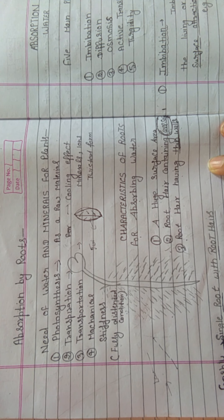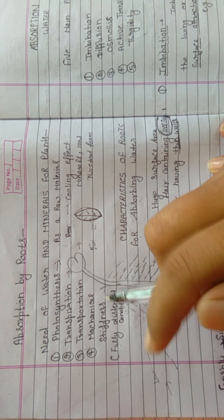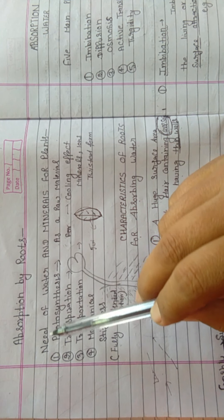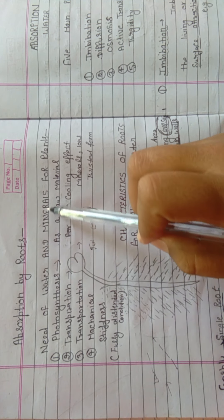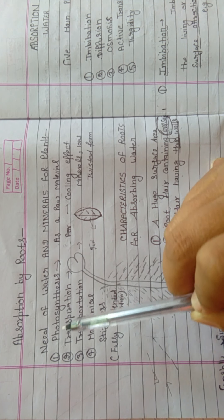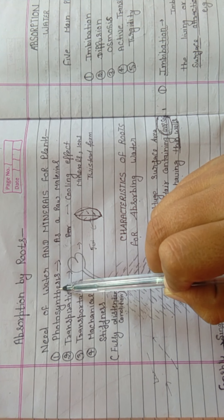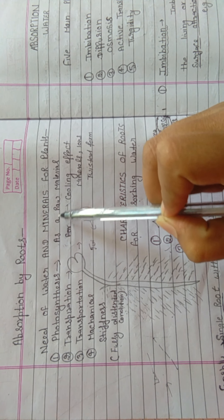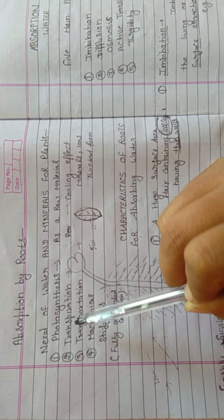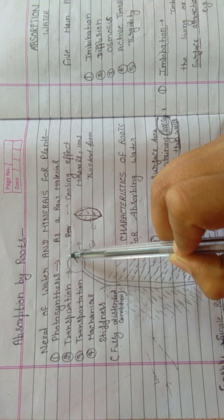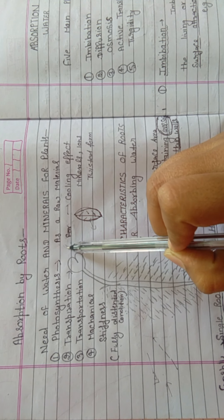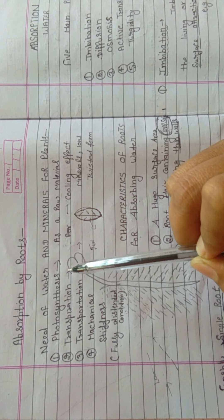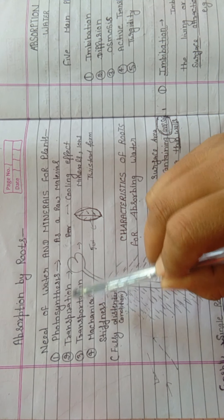Good morning students, we are starting from chapter number four: Absorption by Roots. Why do plants need water and minerals? First, for photosynthesis — water is used as a raw material. Second, transpiration — plants remove extra water in the environment through stomata, which gives a cooling effect.